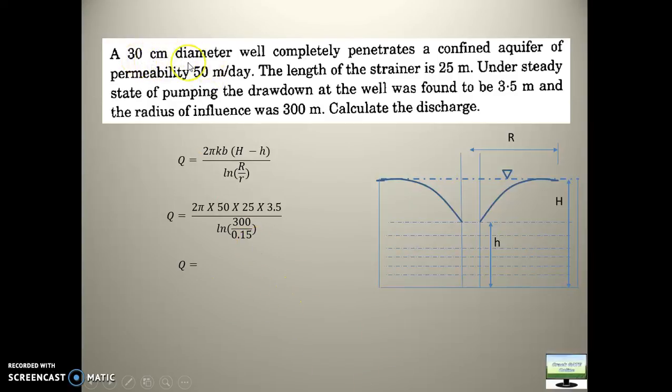So put this value 30 by 2. So convert that into meter. Because this 300 is in meter. So this value of radius should be in meter. So that's how you have to check the dimension. Here also, I will not calculate the value of Q. Keep your calculator and write the value of Q in comment section.